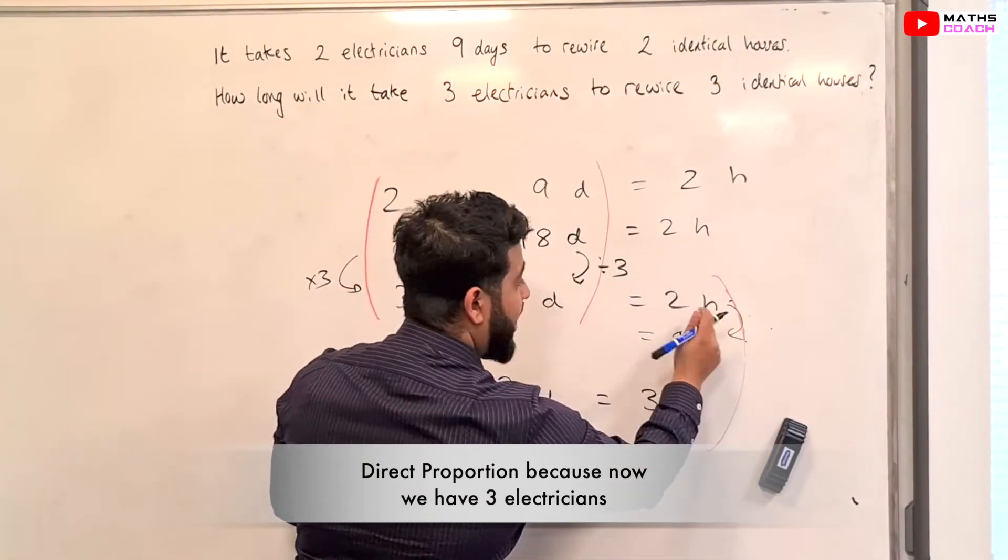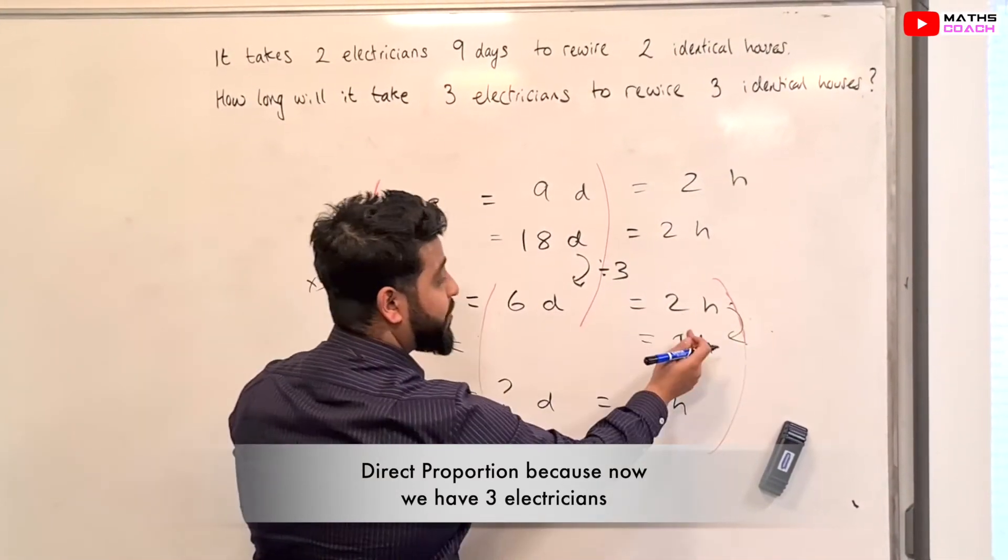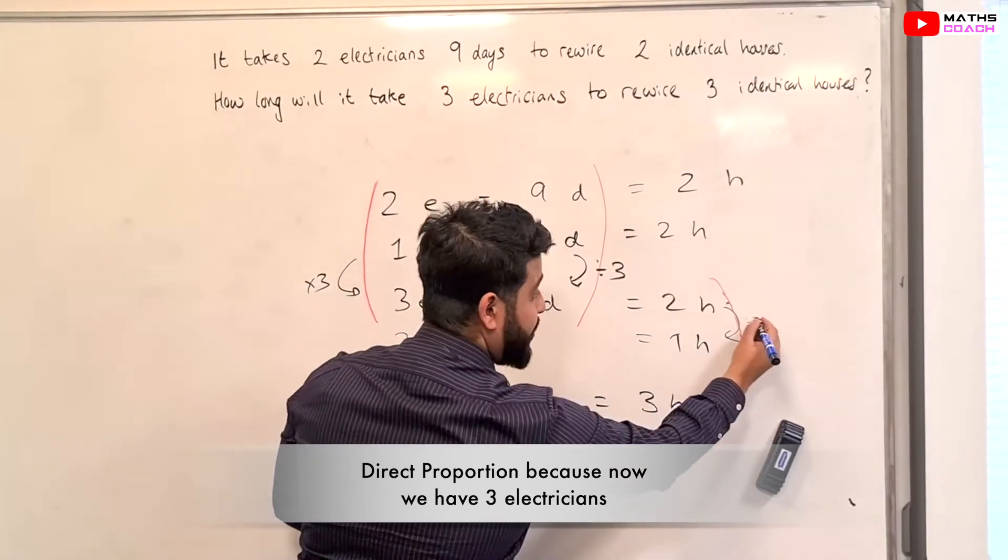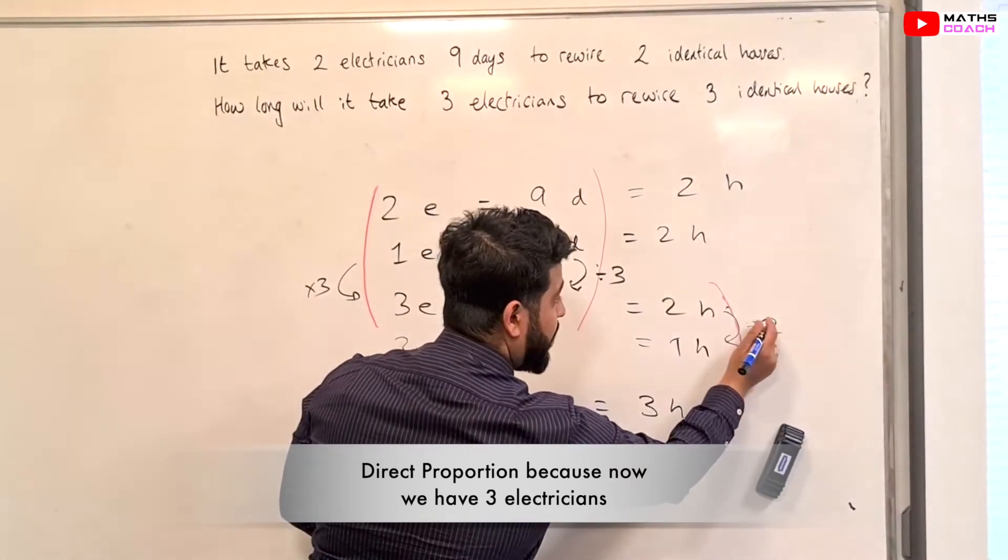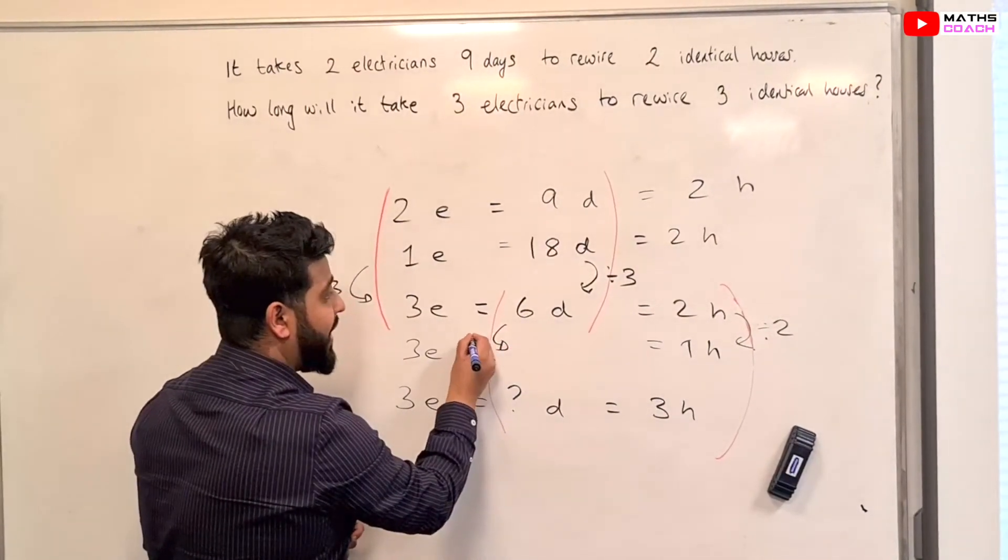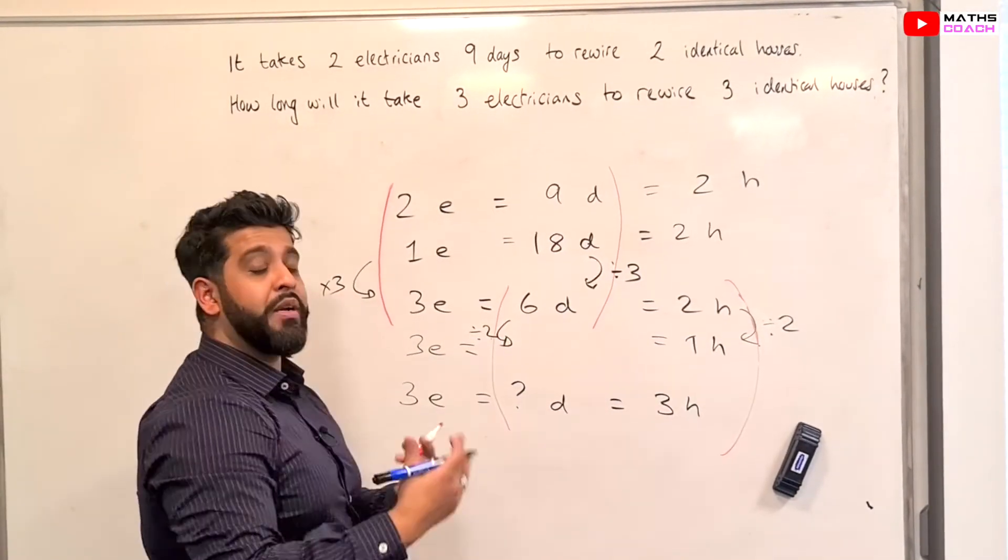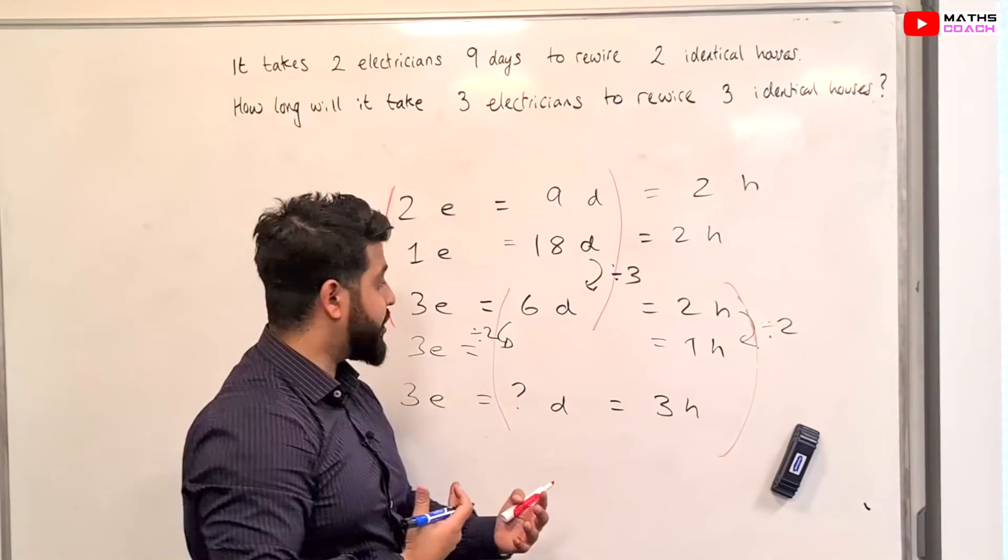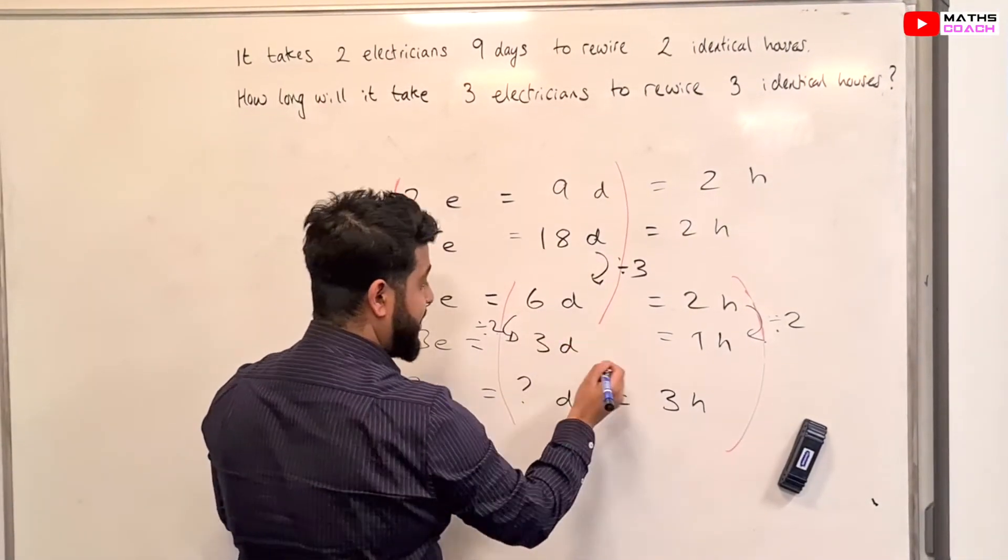So therefore, if we want to work out how many days it takes for 1 house and we divide here by 2, we're also going to divide this by 2 as well because they have a direct proportion relationship. So, 6 divided by 2 is 3 days.